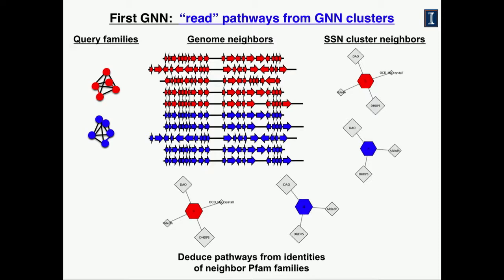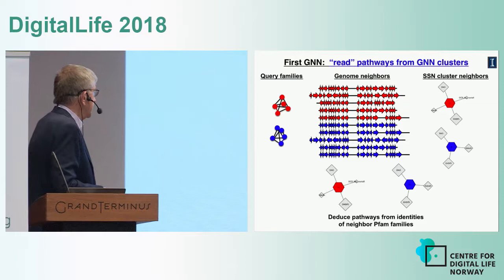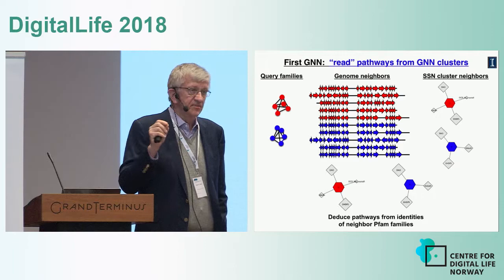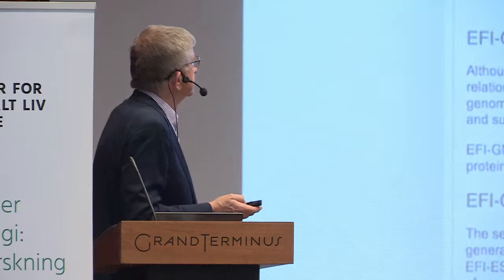The idea is that you can use the genome neighborhood network to deduce a pathway from the identity of the neighboring PFAM families. I'm a chemist and enzymologist, so it's useful to know something about chemistry — just because a protein is in a PFAM family doesn't mean you know exactly what the reaction is, but you likely know the kind of chemistry being catalyzed by members of that family.